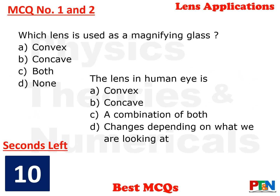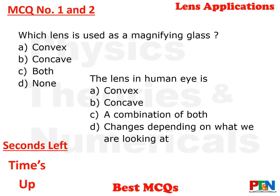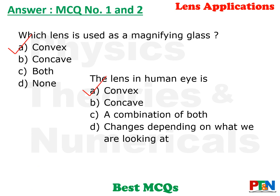Here comes the first MCQ — in fact two MCQs together. Which lens is used as a magnifying glass, and what type of lens does the human eye have? You have got 10 seconds — your time starts now. Time's up. Let's see the answer. In both cases it is a convex lens. A convex lens is used as a magnifying glass, and the human eye also has a convex lens.